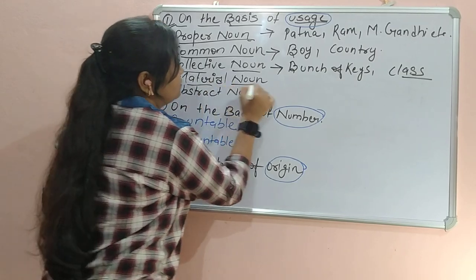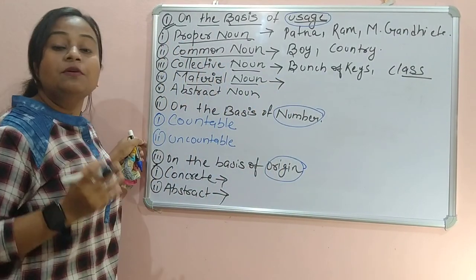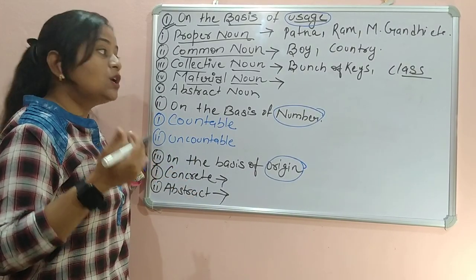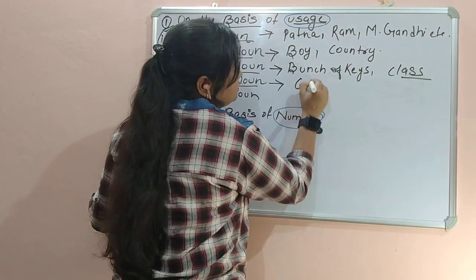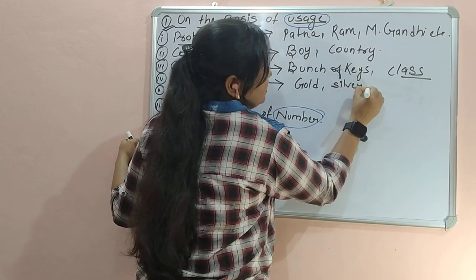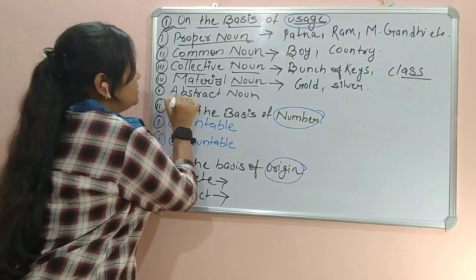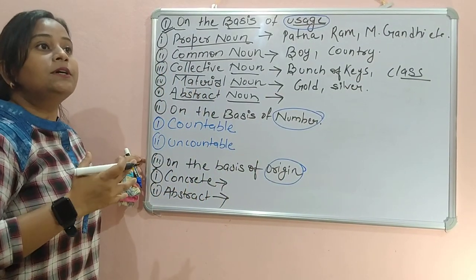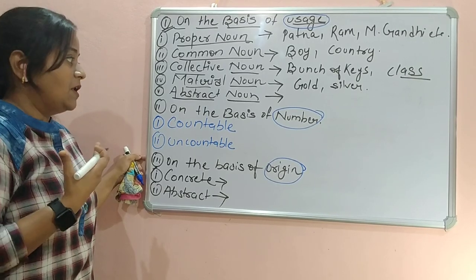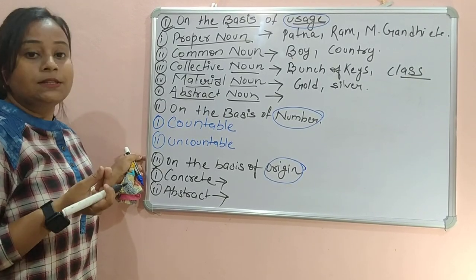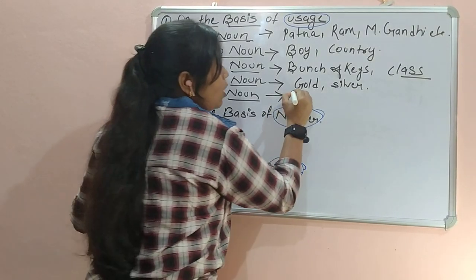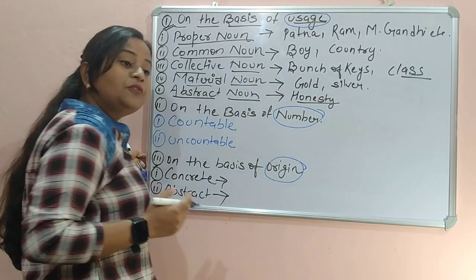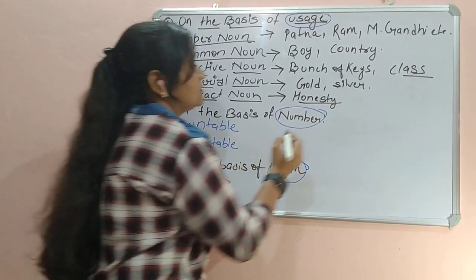Then the next one is material noun. Material noun is the name of a material or substance from which something is made or consumed — like gold, silver, etc. Then the next one is abstract noun. Abstract noun is a noun which represents a feeling or idea that cannot be seen, only felt — like honesty, bravery.